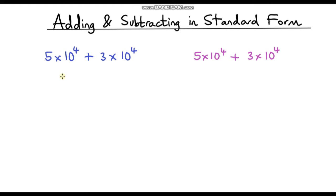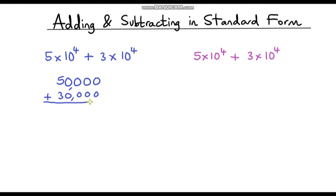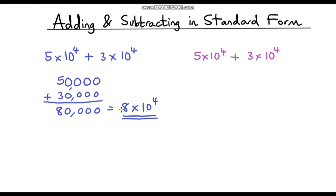So 5 times 10 to the power 4 — we've got a 5, and then times 10 four times — so that's 50,000. Now I can see the power of 10 is the same, so this one is just going to be 30,000. We've got 50,000 plus 30,000 which is 80,000. Since the question is in standard form we need to write our answer in standard form. Because we're still dealing in the tens of thousands, the power stays the same — so this is 8 times 10 to the power 4.